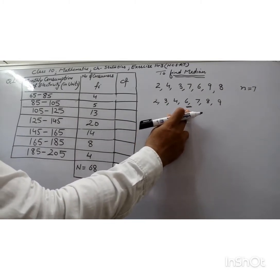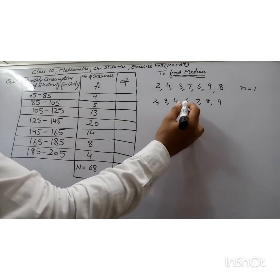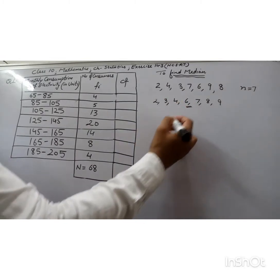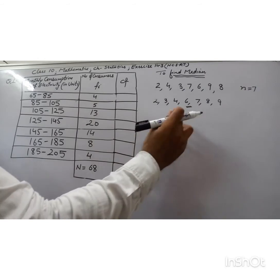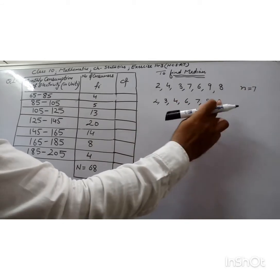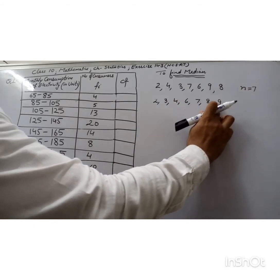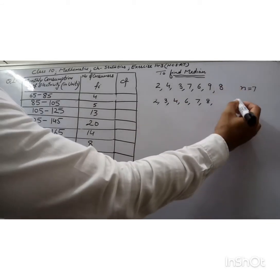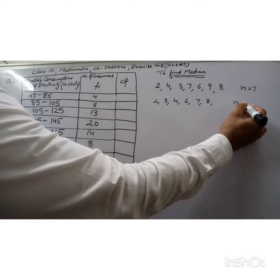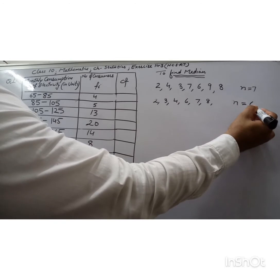So 6 is the middlemost observation, hence the median is 6.